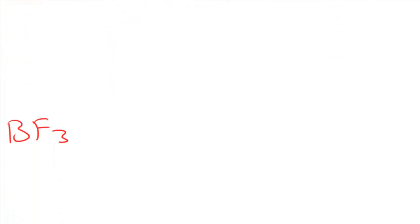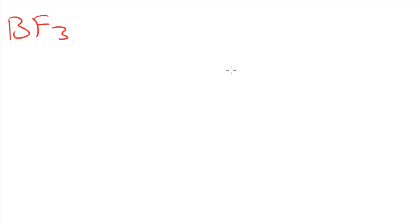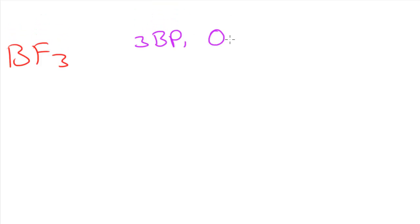Now let's take a look at an example which involves three electron pairs. This particular example contains three bonded pairs and no lone pairs. I'll also take a look at what would happen if we had two bonded pairs and one lone pair, but I'll do that after.